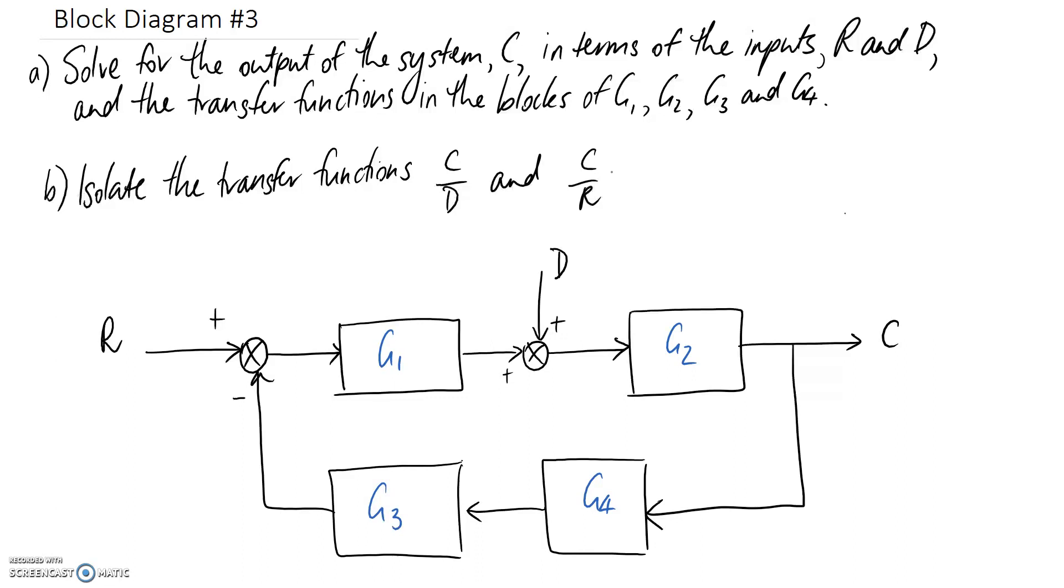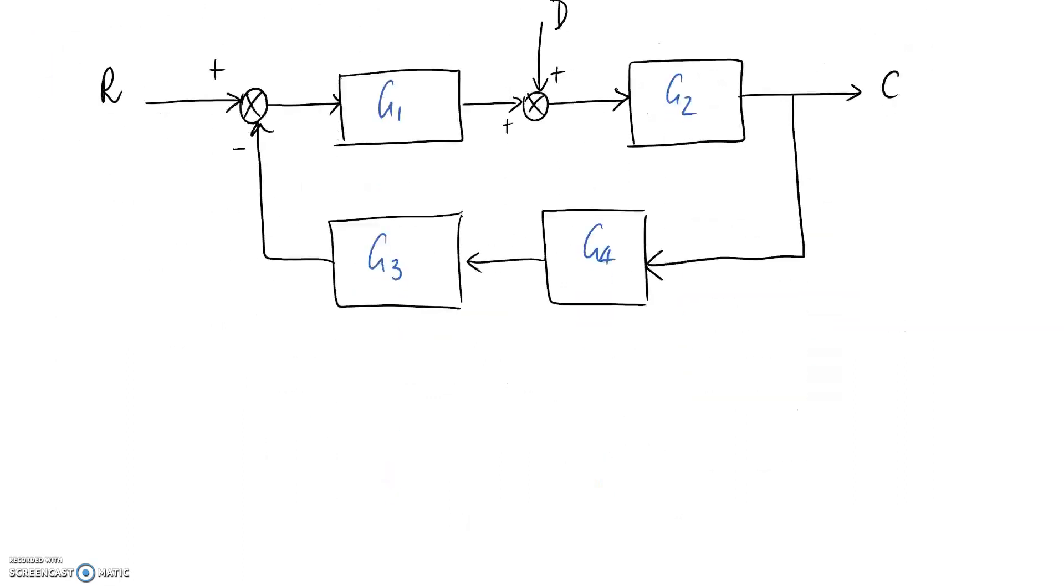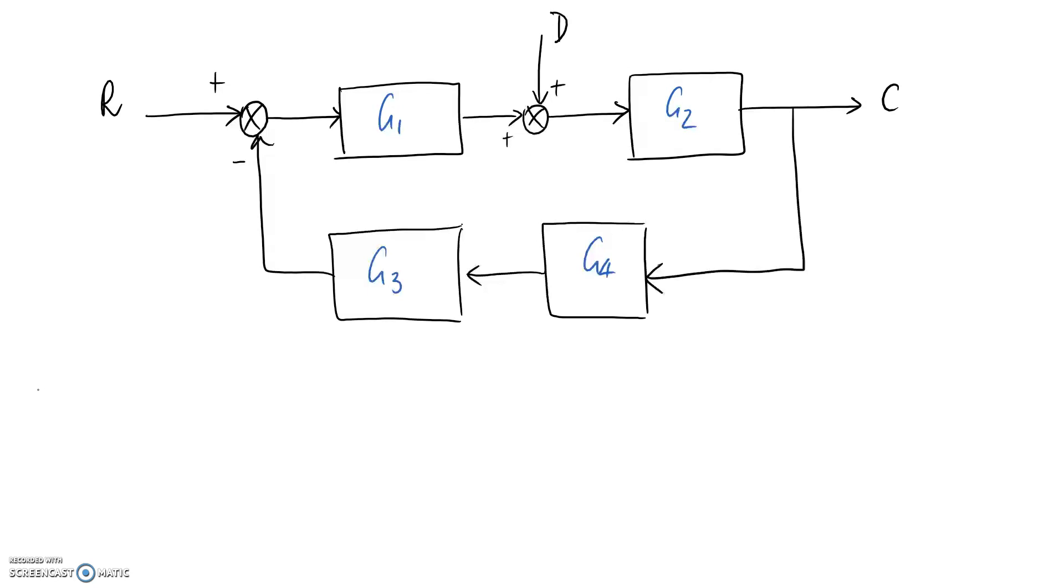We're just looking for an expression for C. I'm going to do this by writing an equation moving from left to right across the diagram. Going into my summing junction here I have R and it's going to be positive, and I have a second input to this summing junction.